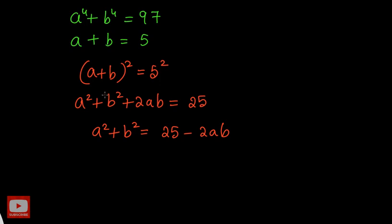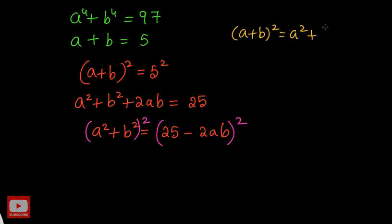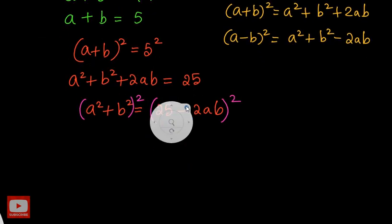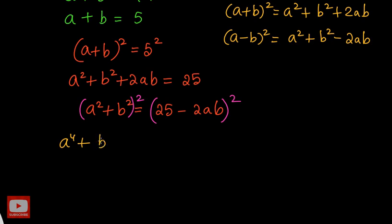Now I hope you are getting to know where I am going, because we have the expression a power 4 plus b power 4. From a squared plus b squared I want to reach a⁴ plus b⁴ — by squaring both sides. The left-hand side is of the form (a + b)² which equals a² + b² + 2ab, and the right side is of the form (a − b)² which equals a² + b² − 2ab. So let's expand both sides directly. The left side becomes a⁴ plus b⁴ plus 2a²b².